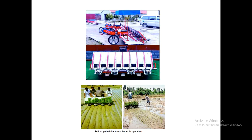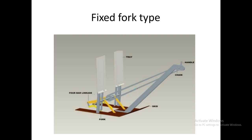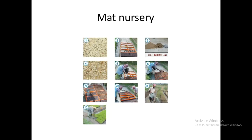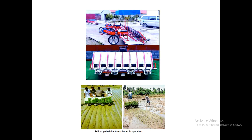There are different types of planting fingers: the fixed fork type, fixed fork with knockout lever, moving finger, and rotating pincer type. In the fixed fork type, two parallel metal plates connected at the end remove seedlings from the mat. The fixed fork with knockout lever adds a lever to knock out seedlings from between the fork. The moving finger type uses two parallel metal plates to remove individual seedlings, while the rotating pincer type uses two rotating discs that hold and remove seedlings from the mat.